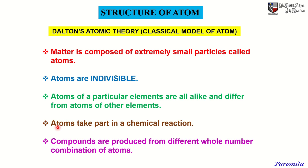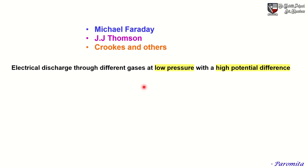According to Dalton, atoms take part in a chemical reaction. Compounds are produced from different whole number combinations of atoms — that means the atoms of an element combine in a simple numerical ratio with those of other elements to form a compound. So according to Dalton's theory, an atom is defined as the smallest part of an element that takes part in a chemical reaction.